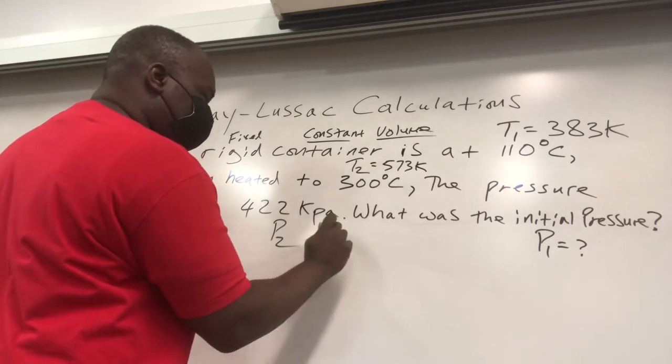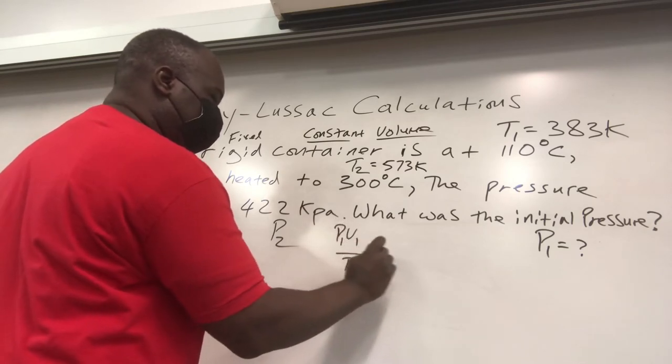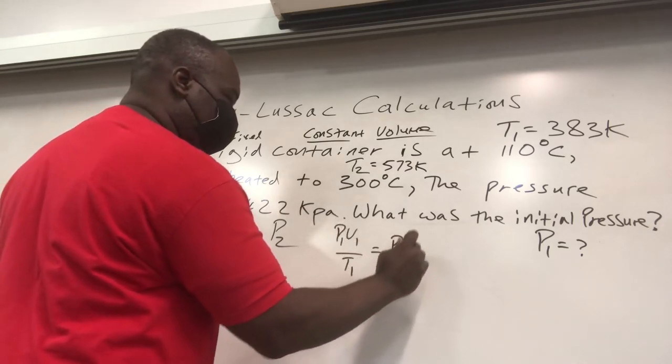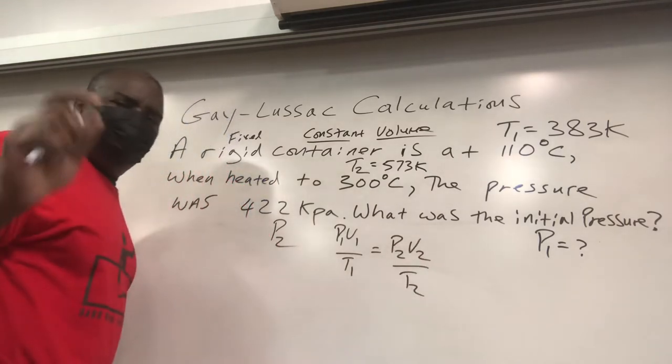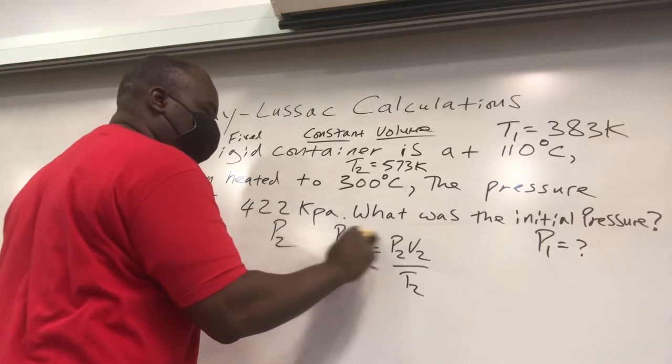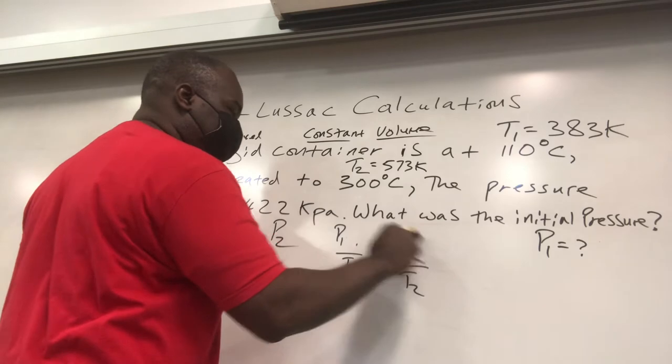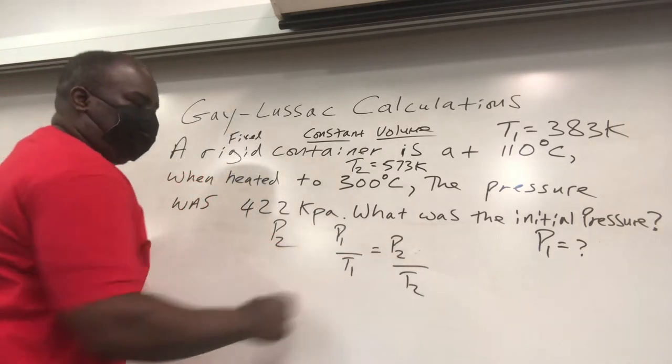So we got it all mapped out, we got it all labeled. Now what we have to do is use the Gay-Lussac equation properly, get our answer, we're good to go. So what do we do? We have P1 V1 over T1 equals to P2 V2 over T2. Now we agreed for Gay-Lussac that volume's constant, so the volume's turn to 1. Go away.